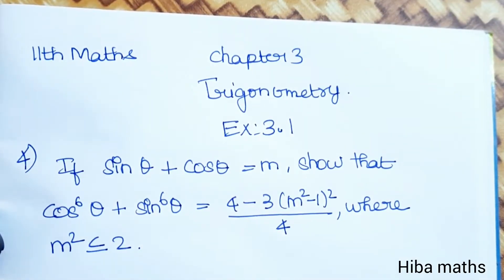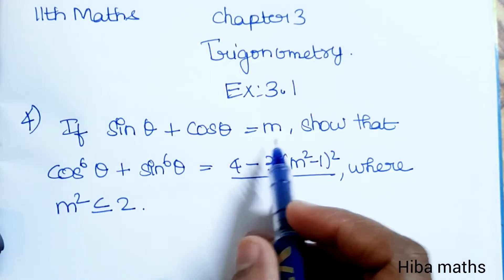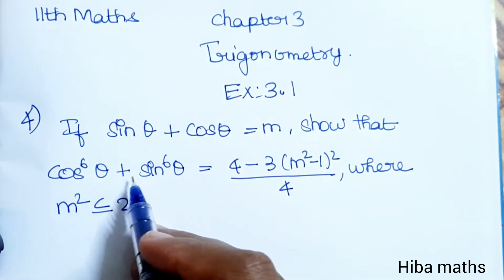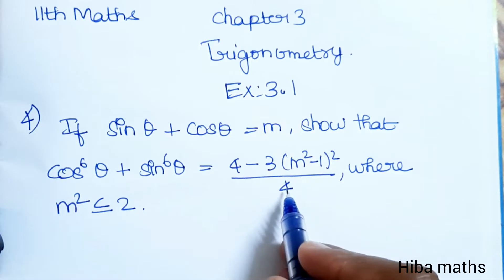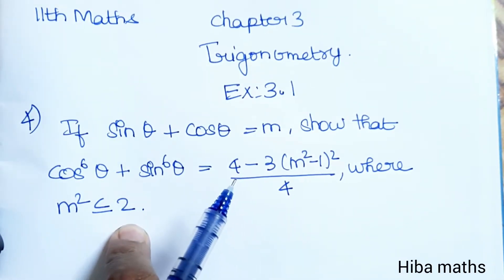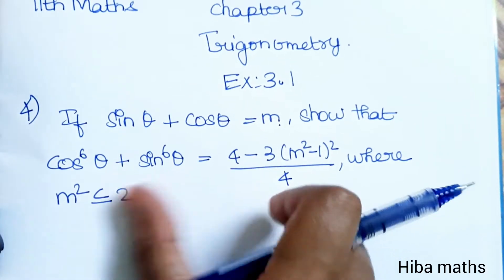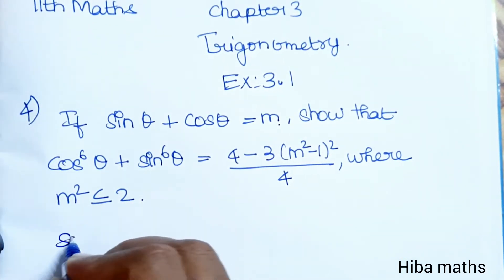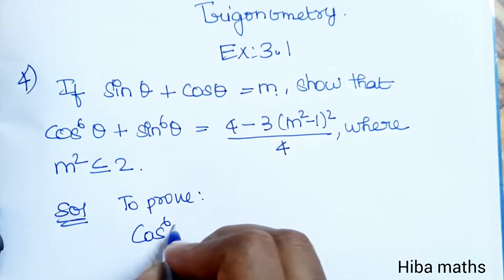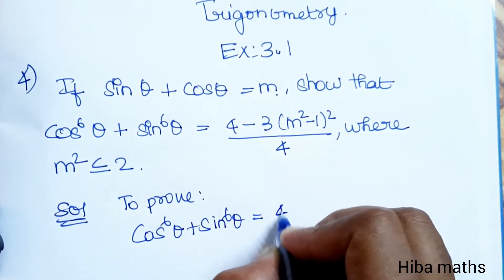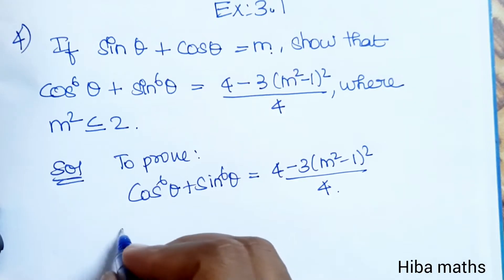Hello students, welcome to Heba Max 11 Standard Math, Chapter 3 Trigonometry, Exercise 3.1, fourth question. If sin θ + cos θ is equal to m, show that cos⁶θ + sin⁶θ is equal to (4 - 3(m² - 1)²) / 4, where m² is less than or equal to 2. We are given the condition that sin θ + cos θ = m, and we need to prove cos⁶θ + sin⁶θ = (4 - 3(m² - 1)²) / 4.